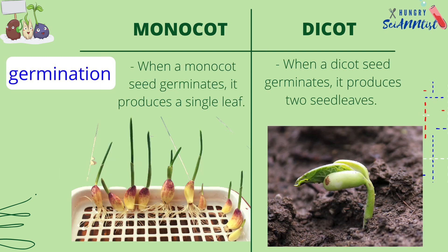When a monocot seed germinates, it produces a single leaf. When a dicot seed germinates, it produces two seed leaves.